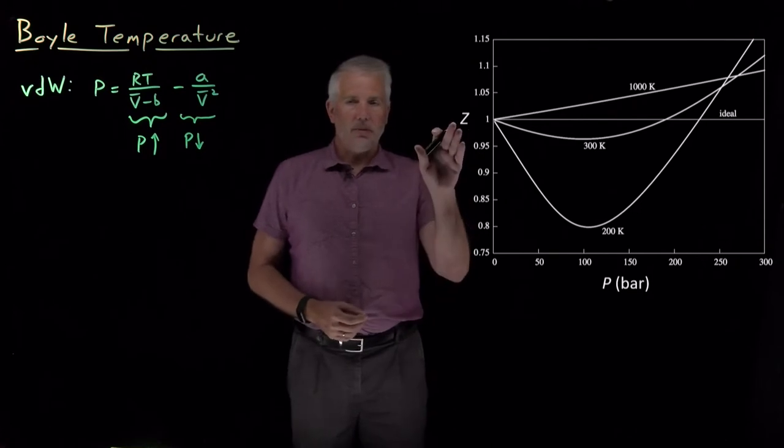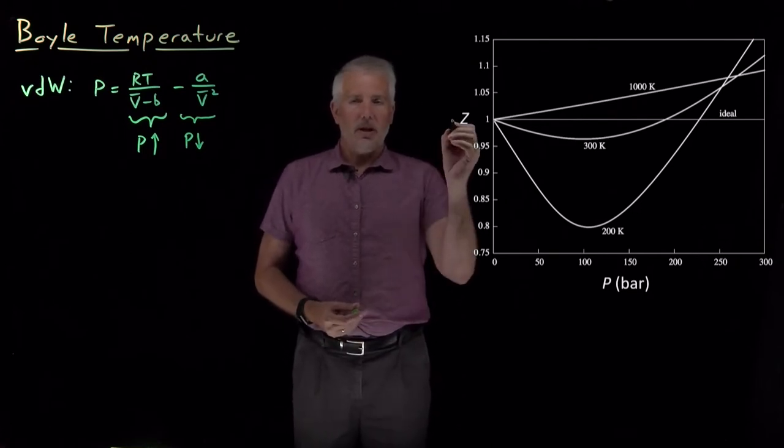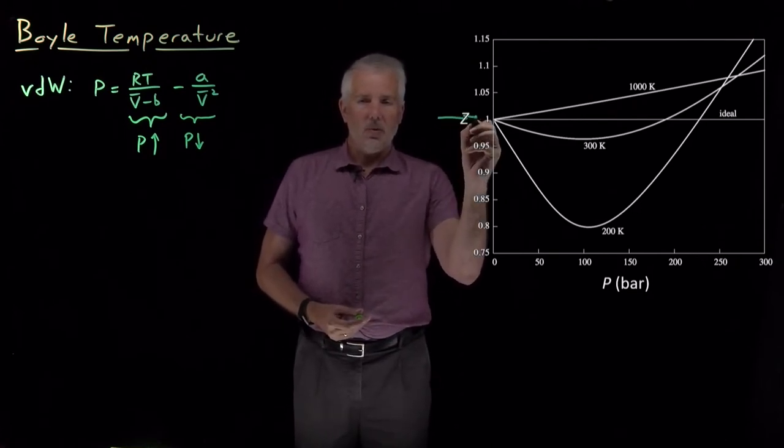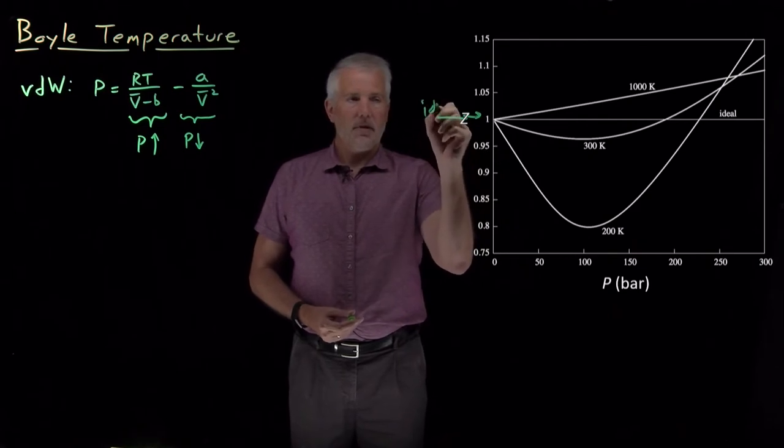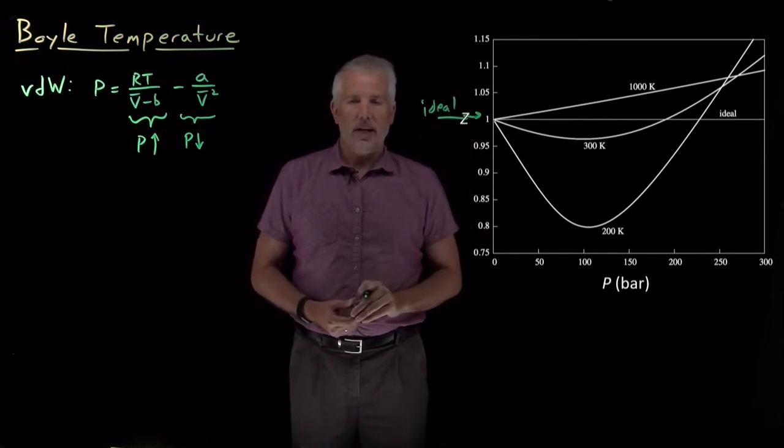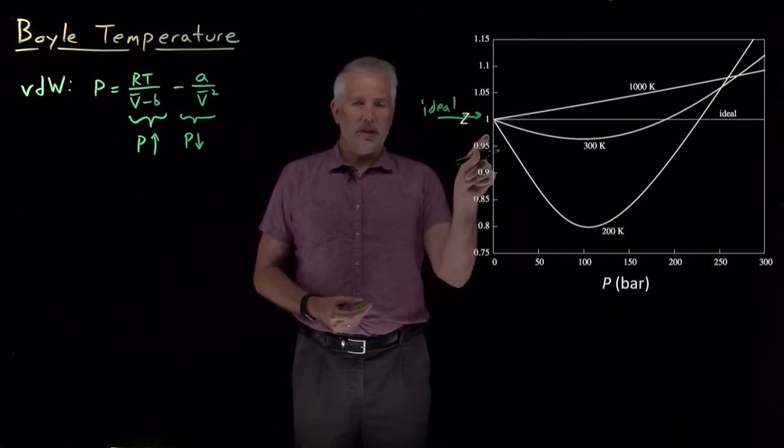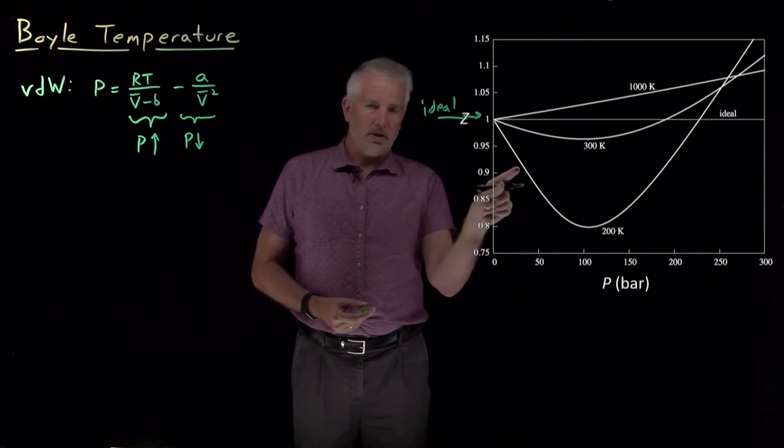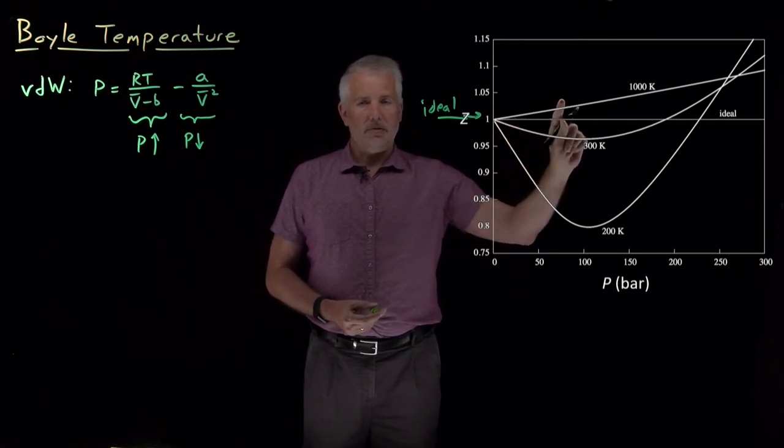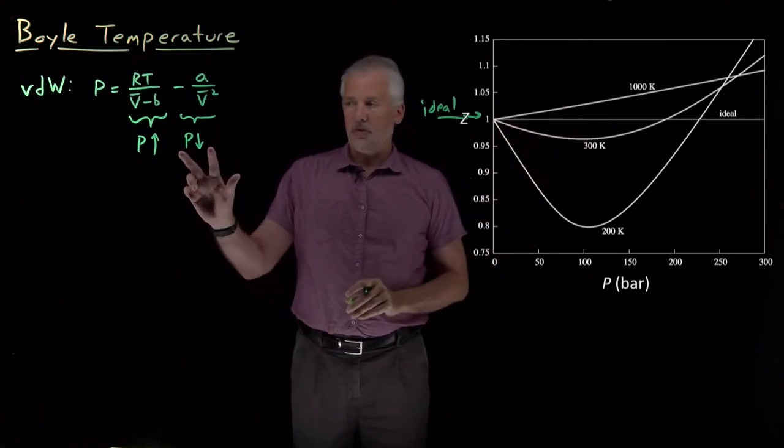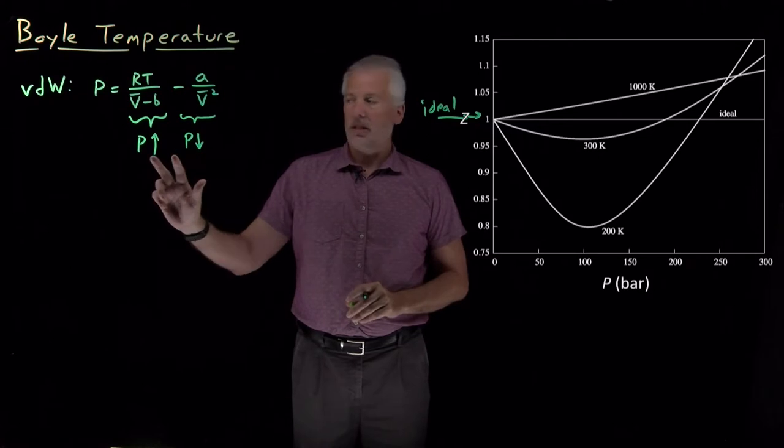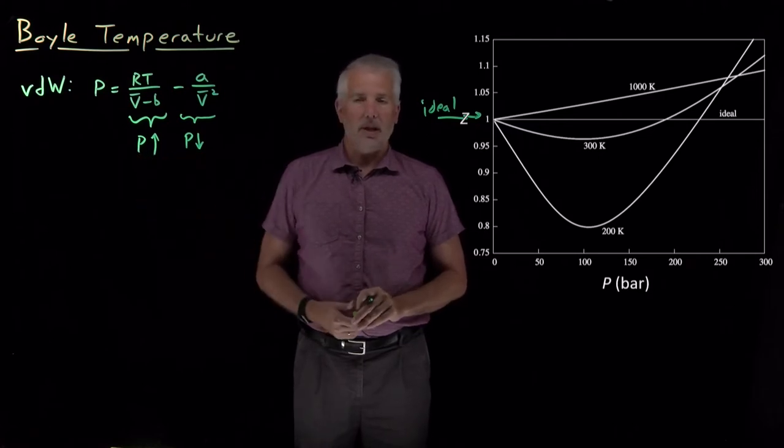And on this graph of compressibility factors, remember that compressibility factor of one is the case when a gas is ideal. We've seen that at cold temperatures, the compressibility factor drops as we increase the pressure. At high temperatures, the compressibility factor increases. The drop is from attractive intermolecular interactions. The increase is from finite molecular volume.